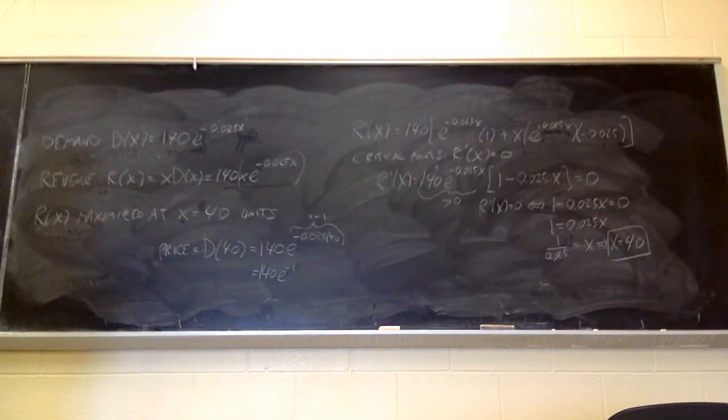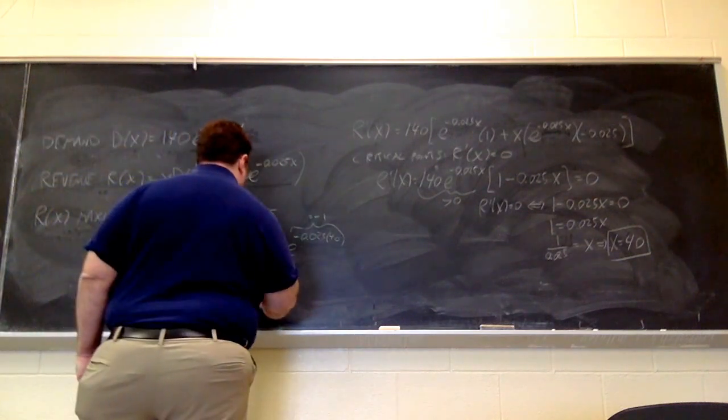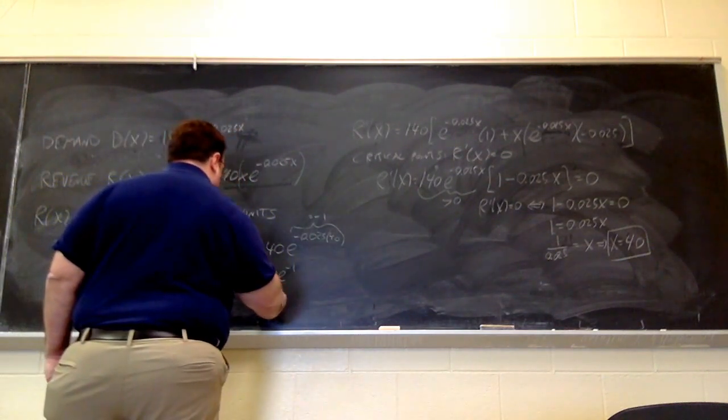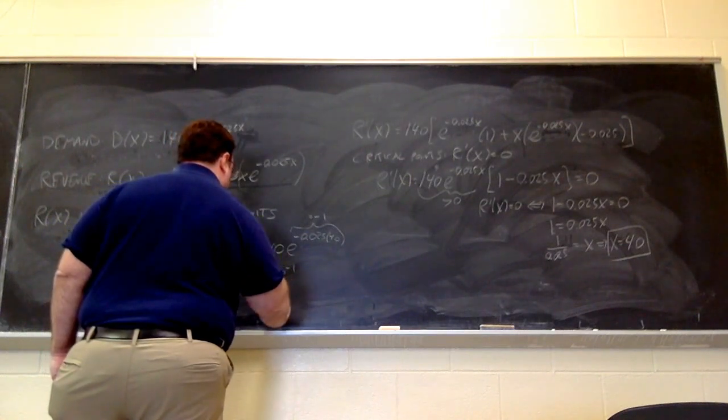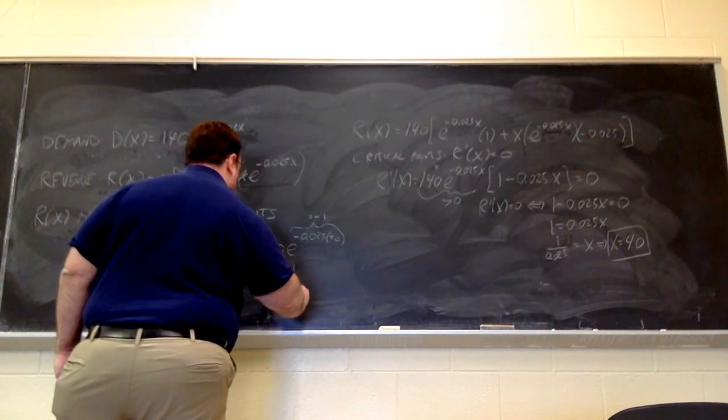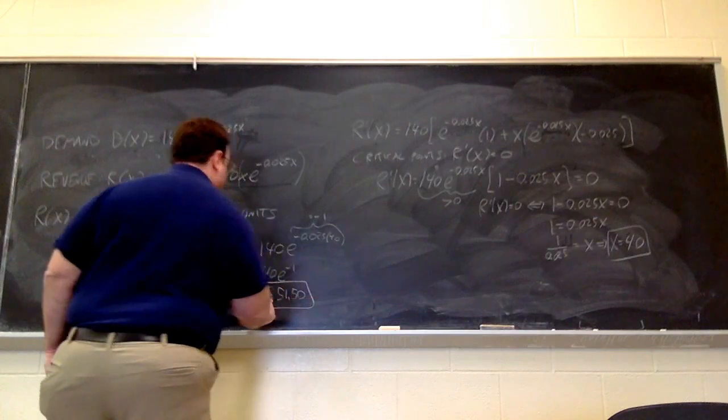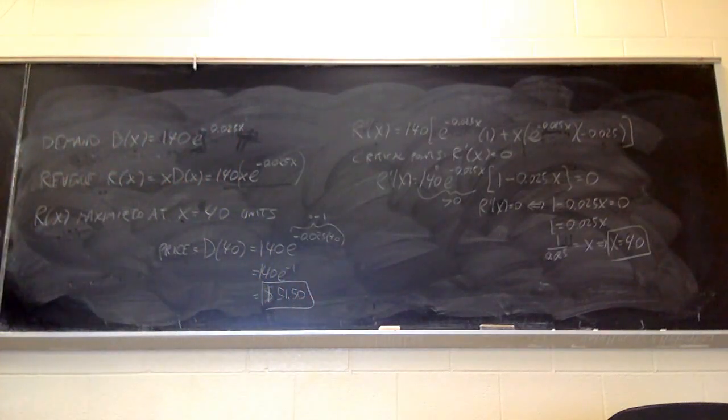Now, for that, you would need your calculator. So, if you plug it into your calculator around two decimal places, I just happen to remember what it is, is two decimal places, $51.50. So, that is the price at which the item should be sold to maximize revenue.